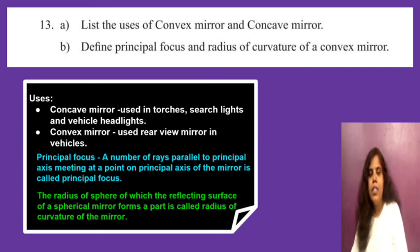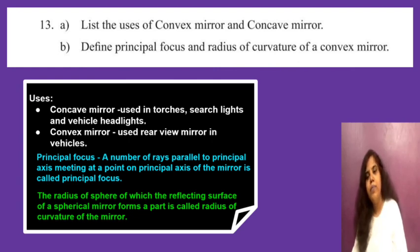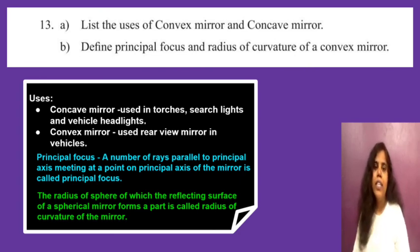Question 13: list uses of convex and concave mirrors, and define principal focus and radius of curvature. Principal focus: a number of rays parallel to the principal axis meeting at a point on the principal axis of the mirror is called the principal focus. Radius of curvature: the radius of the sphere of which the reflecting surface of a spherical mirror forms a part is called the radius of curvature of the mirror.